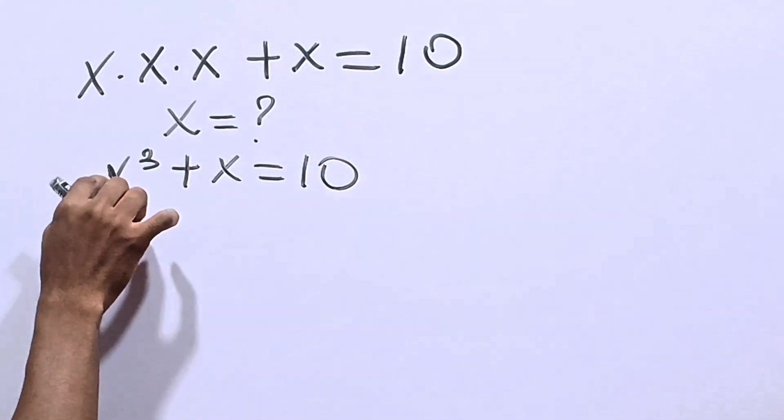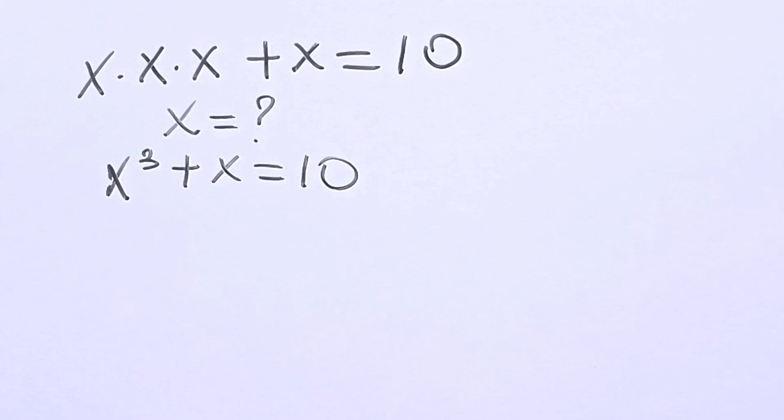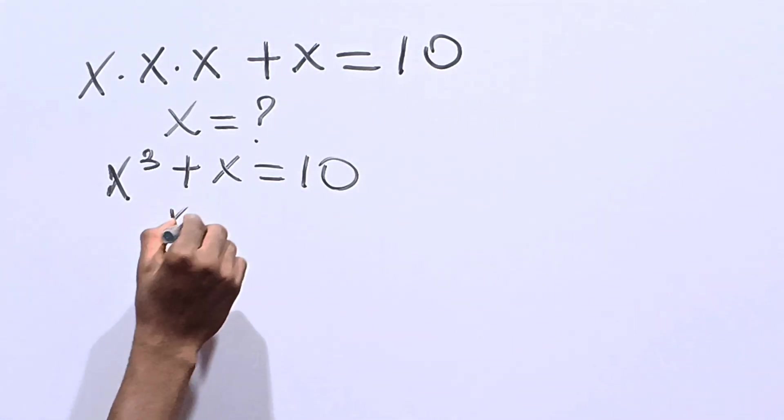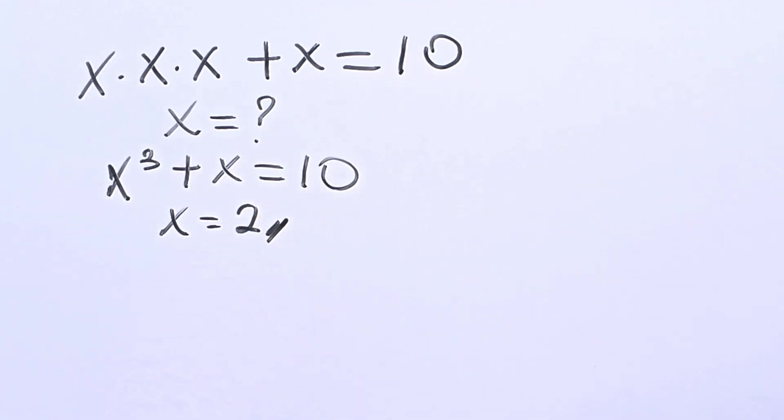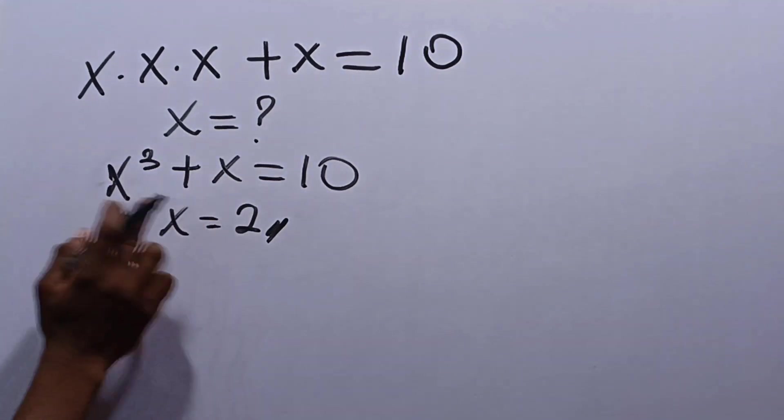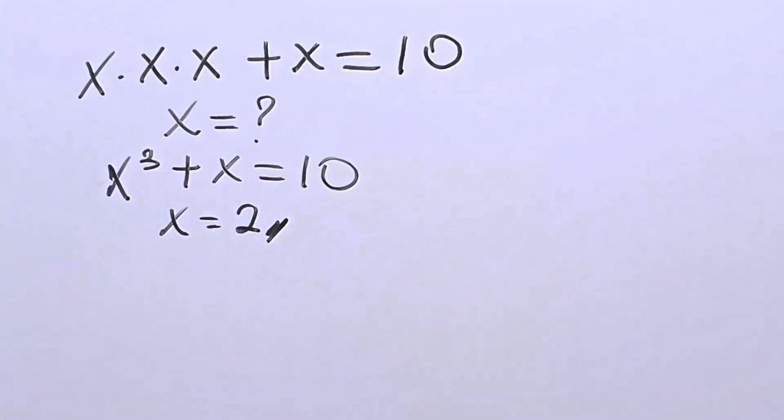Now, having this, we can deduce that x is equal to 2. This is just from deduction, and this is one of the answers for x, because 2 cubed is 8, and 8 plus 2 is 10.